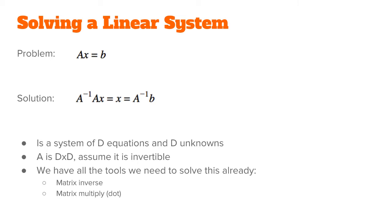The solution is that we just multiply by a inverse on both sides. We're allowed to do that because we're assuming a is a square matrix, meaning that if it's invertible then x has a unique solution. In other words if the dimensionality of x is d, then we have d equations and d unknowns.